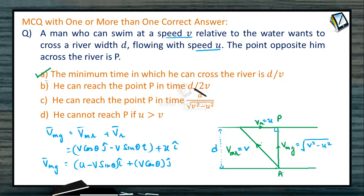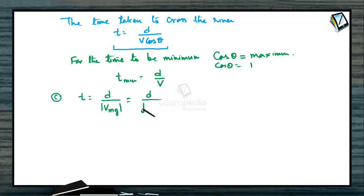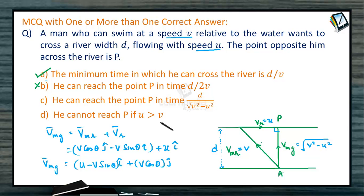Option B says he can reach point P in time D/2V — this is wrong. For option C, he reaches point P in time D/√(V²−U²). The time T can also be written as D divided by the magnitude of the velocity of the man with respect to the ground, which is D/√(V²−U²). So option C is also correct.